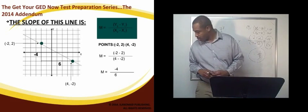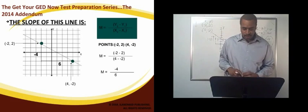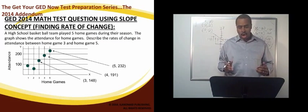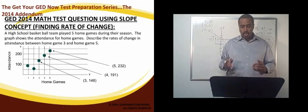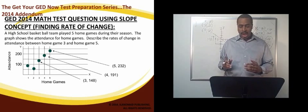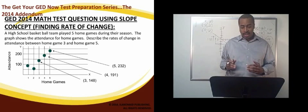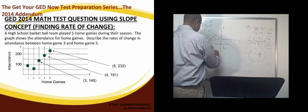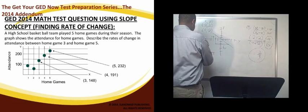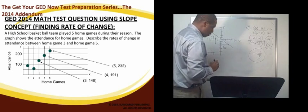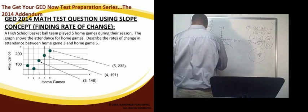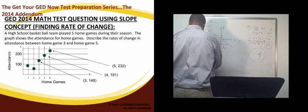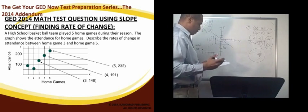Now, you're going to see that as a math skill, but then you're also going to see that as a word problem. So let me give you a word problem here if you look on the screen. A high school basketball team played 5 home games during their season. The graph shows the attendance for home games. Describe the rates of change in attendance between home game 3 and home game 5. So you have that chart there, and you have 1, 2, 3, 4, 5 home games, and that's 100 attendance, and that's 200 attendance. And you have your different points here. That one's just a little bit under 100, and then it went down for home game 2, and then it went up for home game 3, and then it went up for home game 4, and then it went up for home game 5.